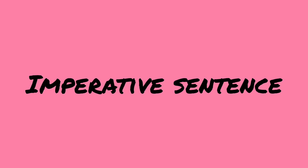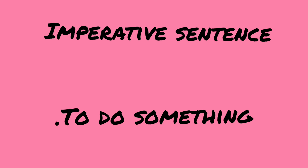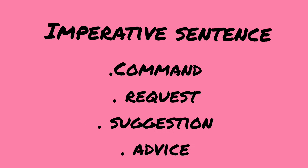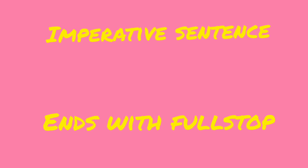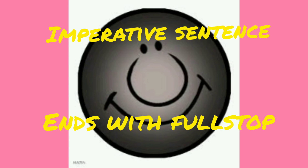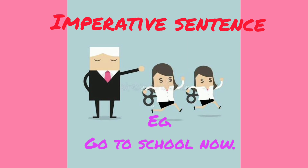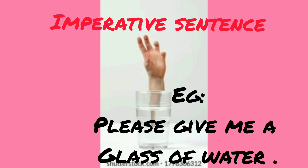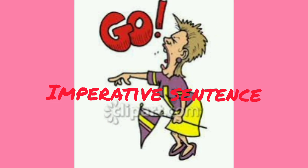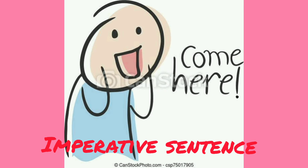The third type of sentence is imperative sentence. This type of sentence tells someone to do something. It can be a command, a request, a suggestion, or an advice. This type of sentence usually ends with a full stop, though sometimes an exclamation mark can be used. For example: Go to school now. Please give me a glass of water. Go there. Come here. These are the examples of imperative sentence.